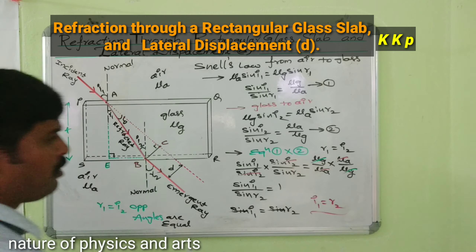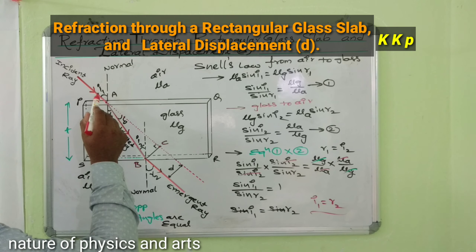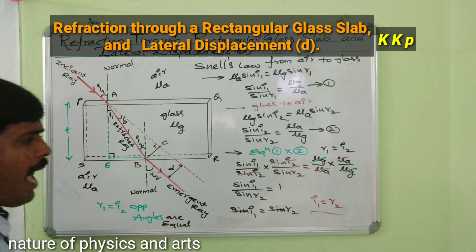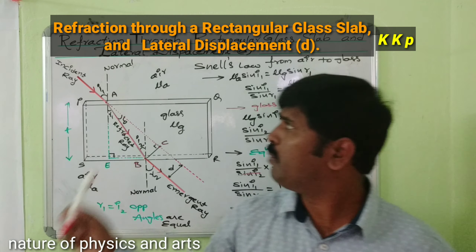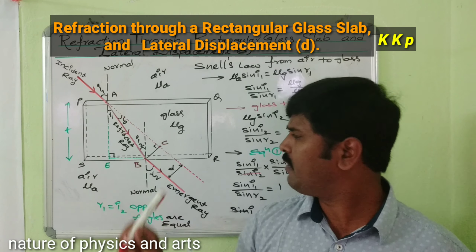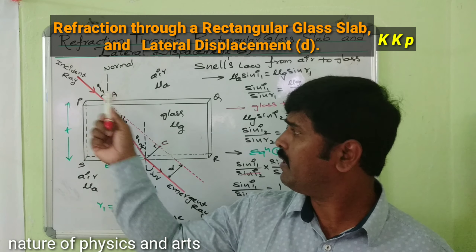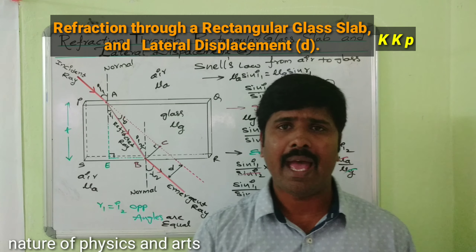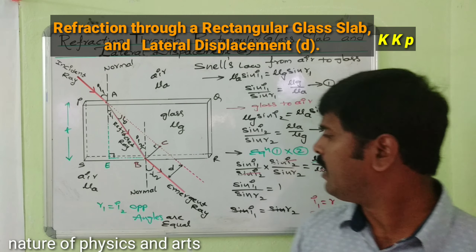Since sin(i1) = sin(r2), for small angles we can write i1 = r2. This means the angle of incidence equals the angle of emergence — so i1 is the angle of incidence and r2 is the angle of emergence.